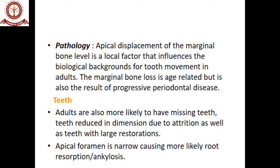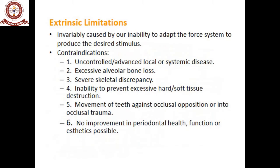The apical displacement of marginal bone level is a local factor that influences the biological background for tooth movement in adults. Marginal bone loss occurs and there is gingival recession. If the same amount of force is applied to a tooth at a different marginal bone level, there will be a lot of moment generated. Therefore, force must be kept as minimal as possible. Adults are also more likely to have missing teeth, teeth reduced in dimension due to attrition, and teeth with large restorations. Graber found more likely root resorption, possibly because the apical foramen is narrower.